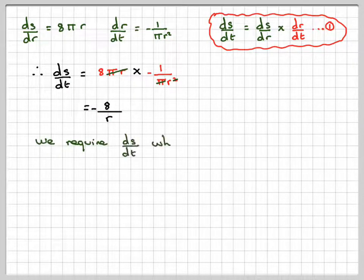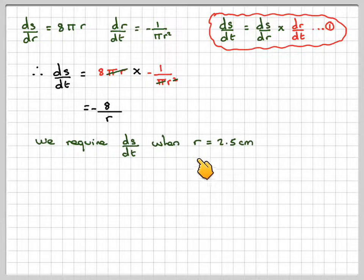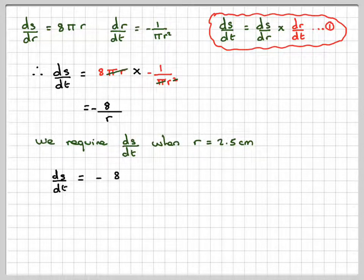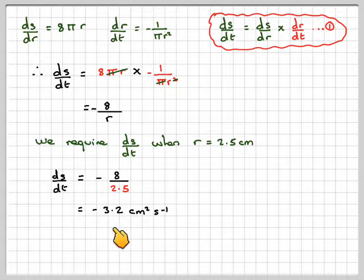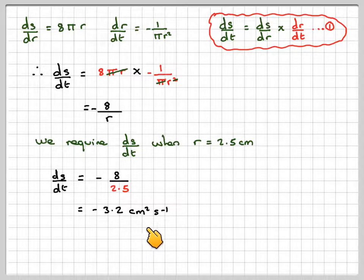We require ds/dt when r is equal to 2.5. So ds/dt equals minus 8 over 2.5, which gives minus 3.2 centimetres squared per second.